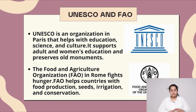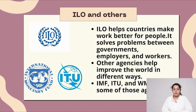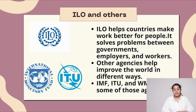The ILO helps countries make work better for people. It solves problems between governments, employers, and workers. Other agencies such as the IMF, ITU, and WMO help improve the world in different ways.